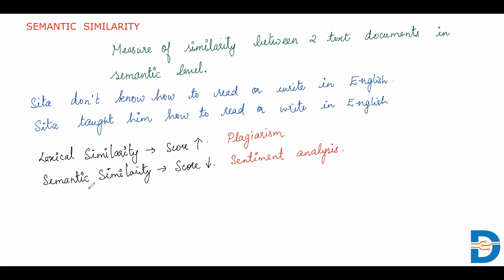There are many techniques which can be used to find semantic similarity, and when you use these techniques you will get some sort of score. Based on that score, you can see how similar or how dissimilar the documents are. I hope you're clear on the difference between lexical similarity and semantic similarity. I'll be discussing the techniques used to find semantic similarity in my upcoming videos, so stay tuned. See you in the next video — thank you, bye!